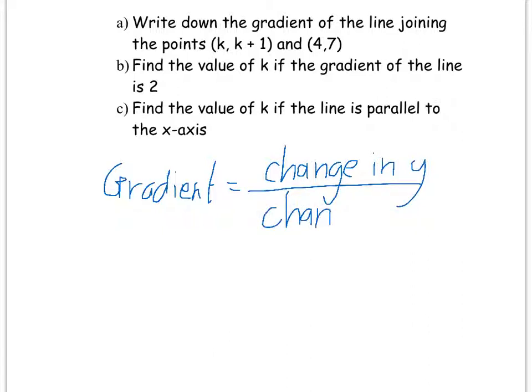It's important to make sure that you are consistent here. If you're going to do 7 take away k plus 1, it's important that you do 4 take away k, or vice versa. I'm going to do k plus 1 minus 7, and k minus 4. So, k plus 1 minus 7 over k minus 4.